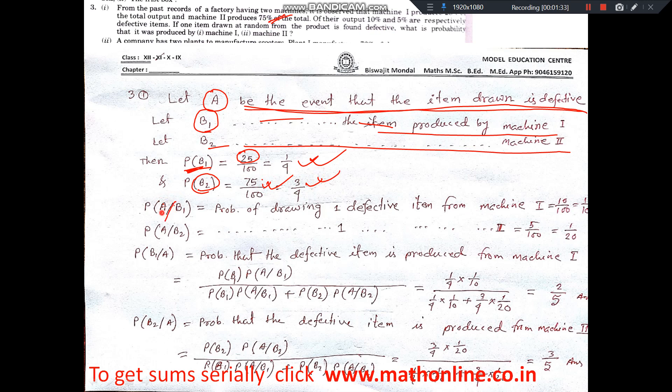A slash B1 means defective item produced by machine 1. Its probability is 10%, so 10 by 100, that is 1 by 10. And A slash B2 means defective item produced by machine 2. It was 5%, so 5 by 100, that is 1 by 20.